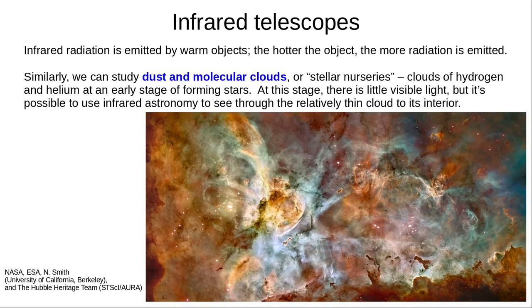Dust and molecular clouds, also called stellar nurseries, are huge clouds of mostly hydrogen and helium at an early stage of star formation. At this stage, there is little visible light, and the cloud is quite cool and thin. We can use infrared astronomy to see through the cloud and map the warmer regions where stars may be forming. Here we can see the enormous Carina Nebula, a huge region of star formation and other exciting events.